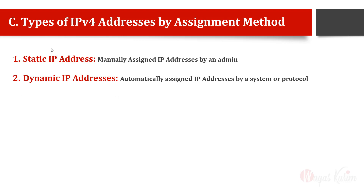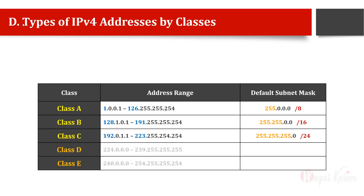The fourth classification is based on classes. If we look at IP addresses in terms of classes, there are five classes in total — A, B, C, D, and E. Out of these, three classes — A, B, and C — are mainly used in day-to-day operations, and two classes are for special purposes or are system-reserved. There is a detailed lecture on classes and IP subnetting with different scenarios; the link will be in the description.